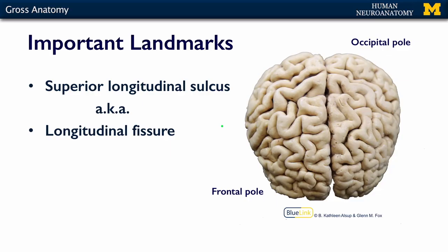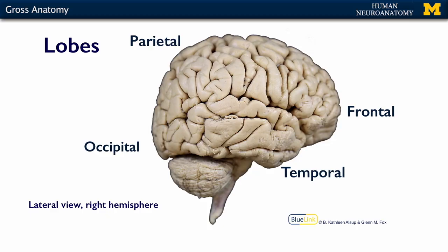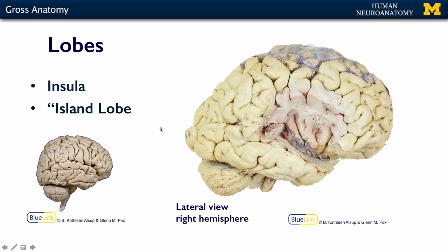The brain has two hemispheres — a right and a left — separated by a structure called the superior longitudinal sulcus, also known as the longitudinal fissure, running right down the middle. The brain is divided into six functional lobes: the frontal lobe, the temporal lobe, the parietal lobe just posterior to the central sulcus, and the occipital lobe all the way in the back. There is also a buried lobe — if you pried open the lateral fissure and removed some brain tissue, you'd find more brain deep to that structure. This buried or island lobe is called the insula.